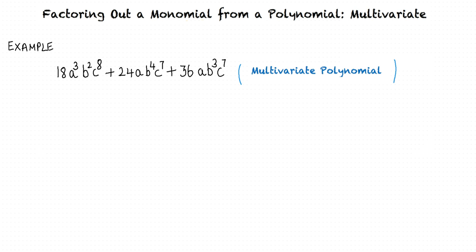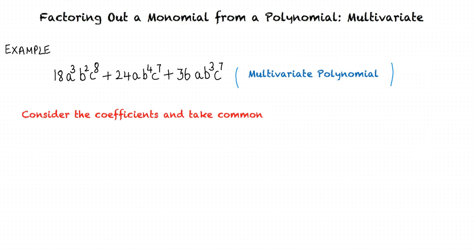In order to factor the given expression, we follow these steps. We consider the coefficients of the variables in each term and take out the common constant, which is usually an integer. Here, the coefficients are 18, 24, and 36. We can thus take 6 as common from each term of the polynomial.